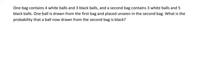One bag contains four white balls and three black balls, and a second bag contains three white balls and five black balls. One ball is drawn from the first bag and placed unseen in the second bag. What is the probability that a ball now drawn from the second bag is black?